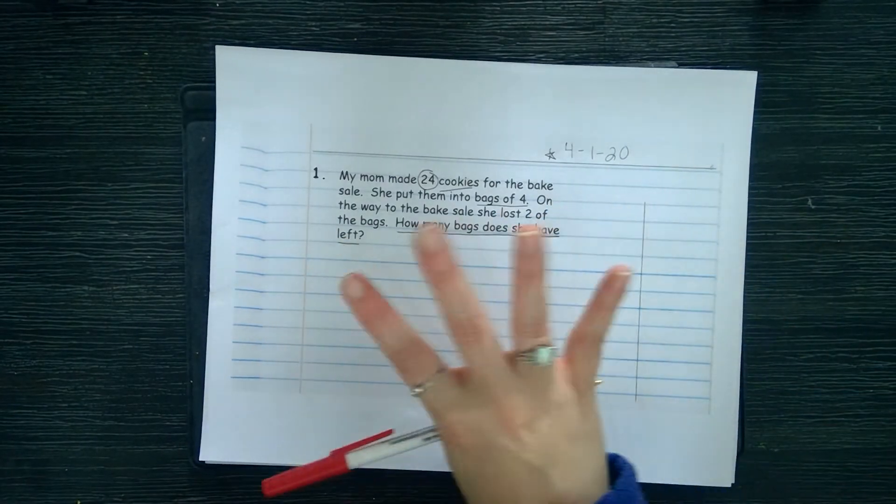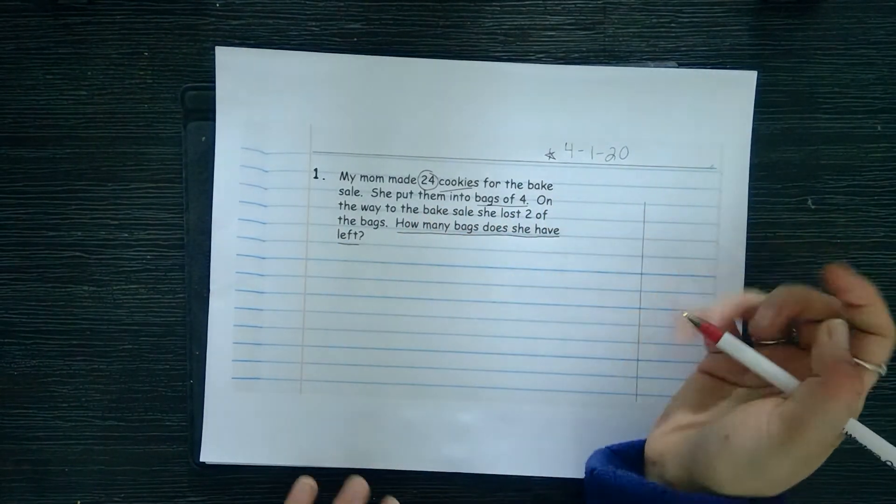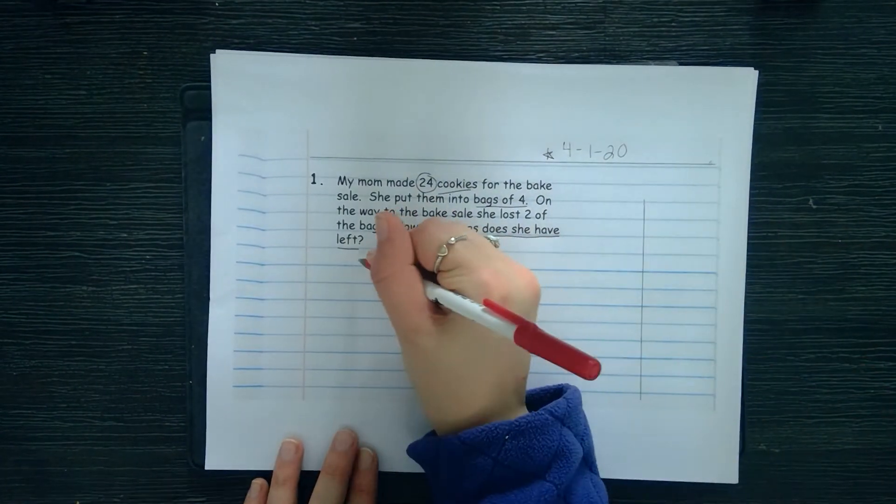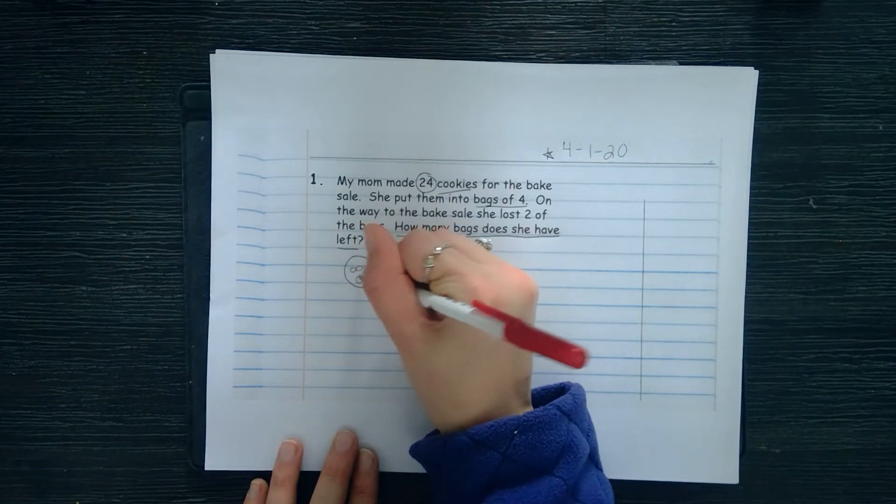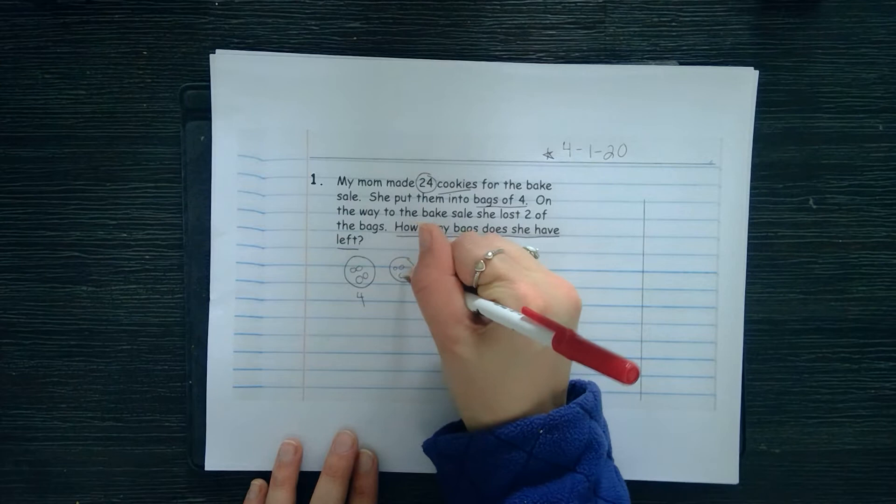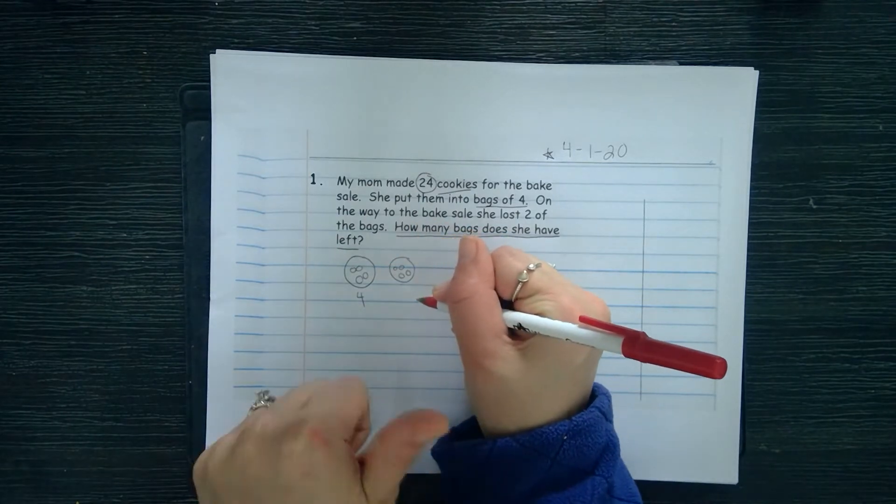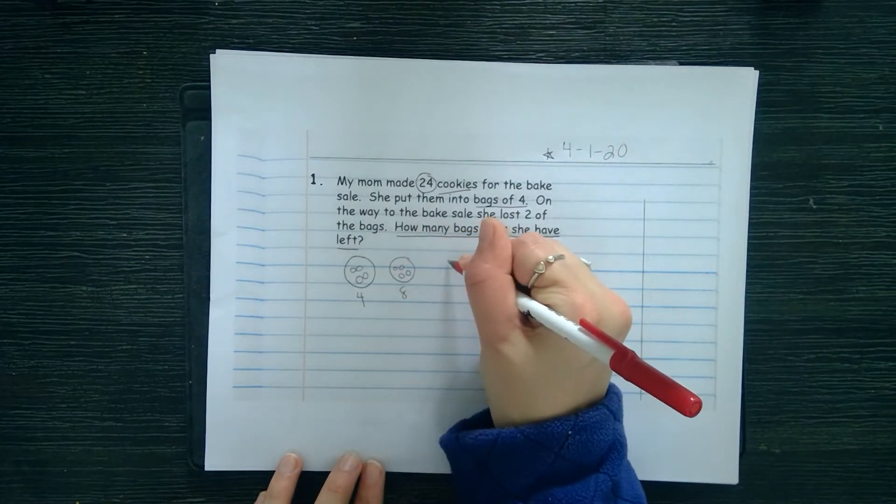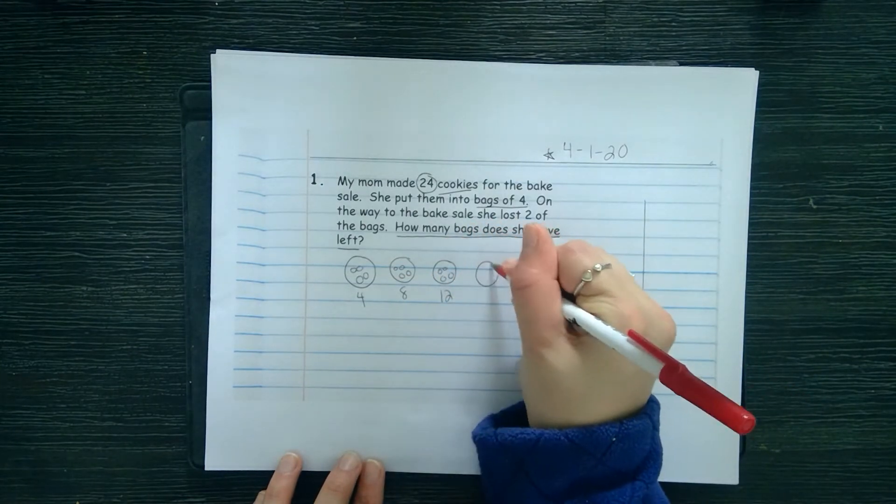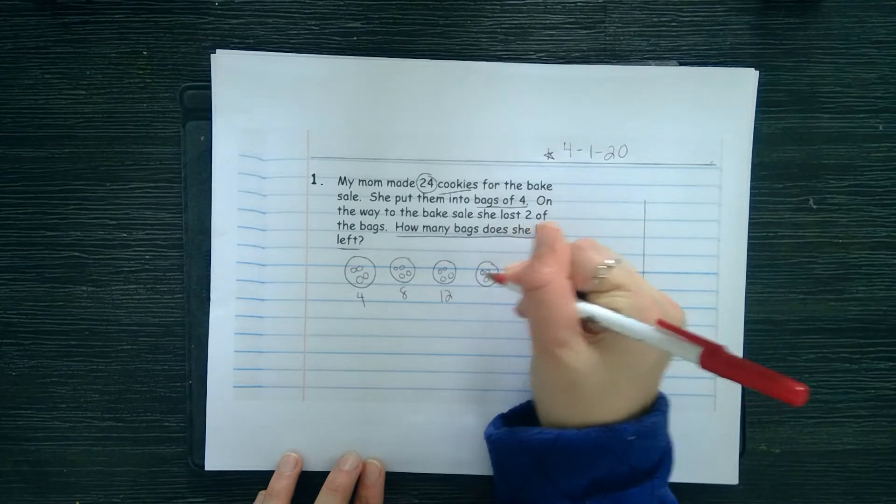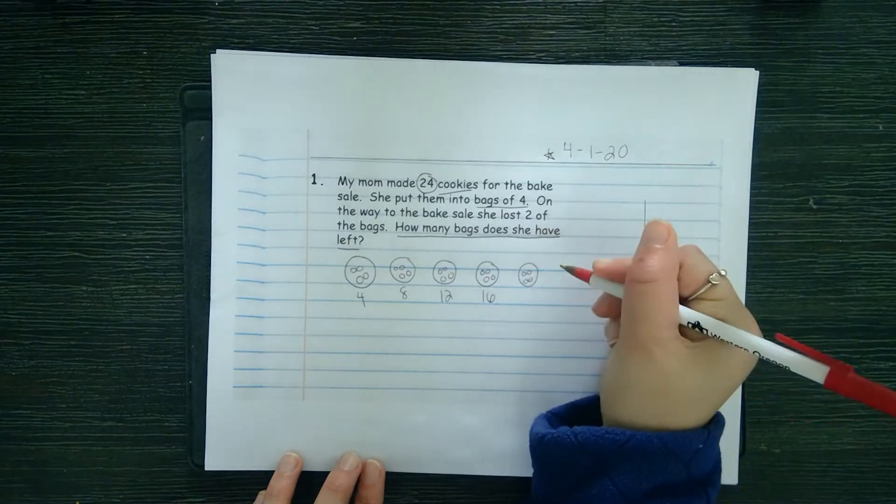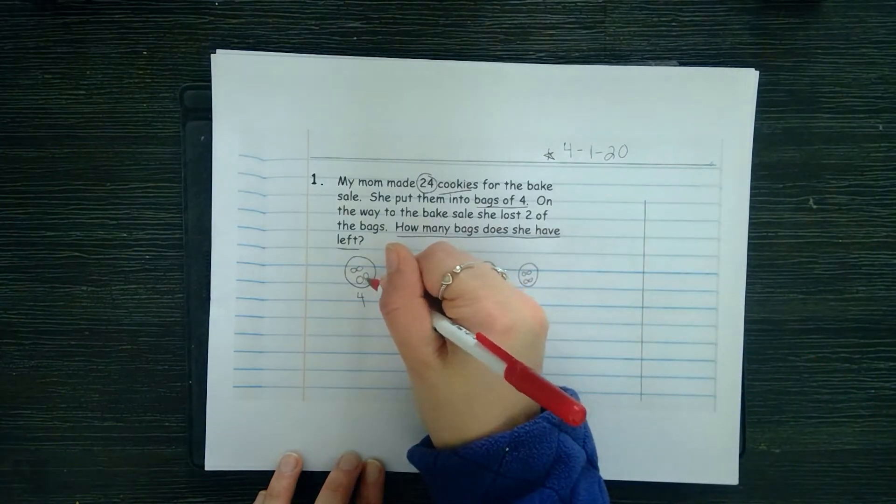I'm gonna start off with making some circles. I'm gonna have one bag and I know that there's four in there, I'll put a four down there. Now I'm gonna do another bag, four. So I'm gonna count by fours: four, eight, okay not to 24 yet. Another one: four, eight, twelve. Four, eight, twelve, sixteen, nope, not quite yet.